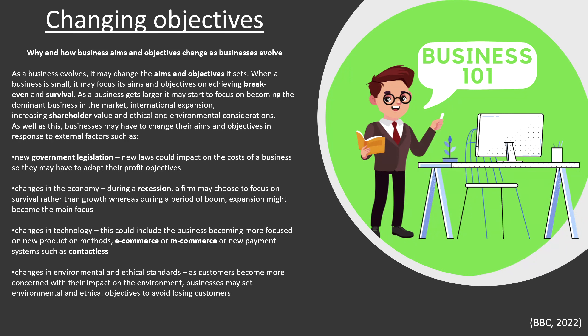Businesses may also have to change their aims and objectives in response to external factors. These could include: new government legislation — new laws could impact on the costs of a business, so they may have to adapt their profit objectives; changes in the economy — during a recession a firm may choose to focus on survival rather than growth, whereas during a period of boom, expansion might become the main focus; changes in technology — this could include the business becoming more focused on new production methods, e-commerce, or new payment systems such as contactless payment; and finally, changes in environmental and ethical standards — as customers become more concerned with their impact on the environment, businesses may set environmental and ethical objectives to avoid losing customers.